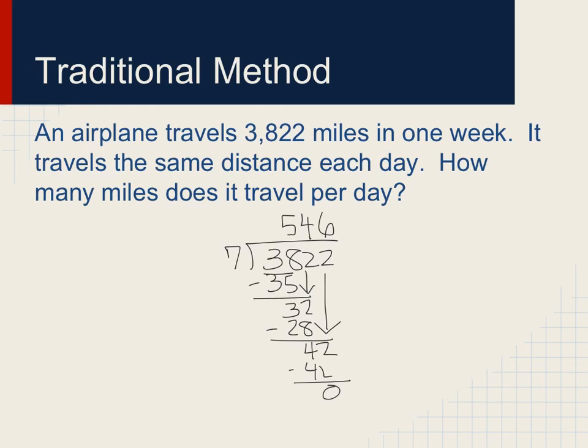What you're doing here with the traditional method is basically just skipping the step where you have zeros. But where your zeros would be is where you are bringing a number down. So you're just eliminating that extra step of adding to find the total quotient.